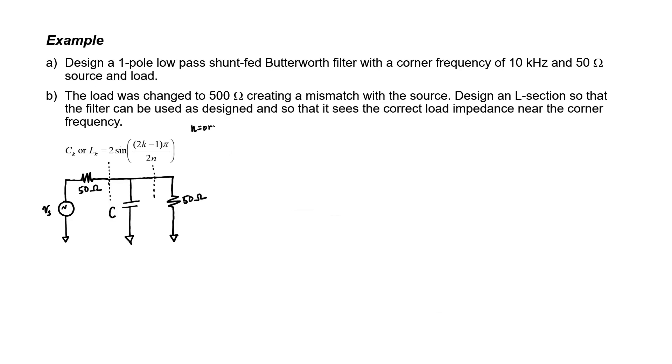In this formula n refers to the order. This is a first order filter. k refers to the particular circuit element within that order. We have only one circuit element here so k equals one. We can plug in k equals one and n equals one to the formula in order to find the prototype value of the capacitor.